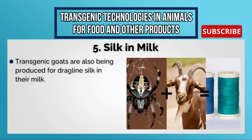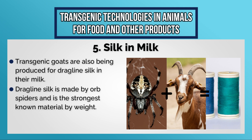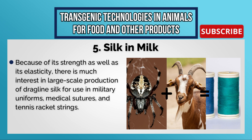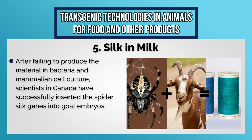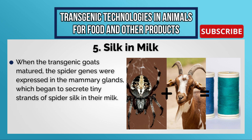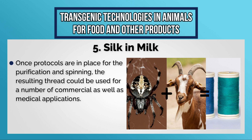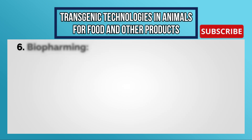Transgenic goats are also being produced for dragline silk in their milk. Dragline silk is made by orb-weaving spiders and is the strongest known material by weight. Because of its strength and elasticity, there is much interest in large-scale production of dragline silk for use in military uniforms, medical sutures, and tennis racket strings. After failing to produce the material in bacteria and mammalian cell culture, scientists in Canada successfully inserted spider silk genes into goat embryos. When the transgenic goats matured, the spider genes were expressed in their mammary glands, which began to secrete tiny strands of spider silk in their milk, with potential commercial and medical applications.